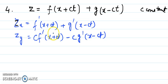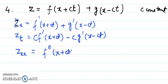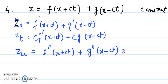Direct elimination is not possible here, because if we try to add or multiply equations, we can eliminate f' or g' but not both simultaneously. So we differentiate again. Differentiating z_x once more with respect to x gives z_xx = f''(x+ct)·1 + g''(x-ct)·1. I'll call this equation number one.